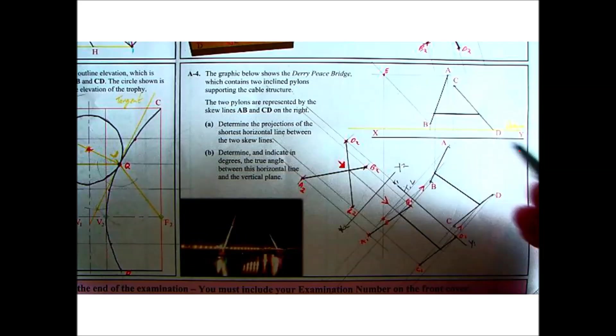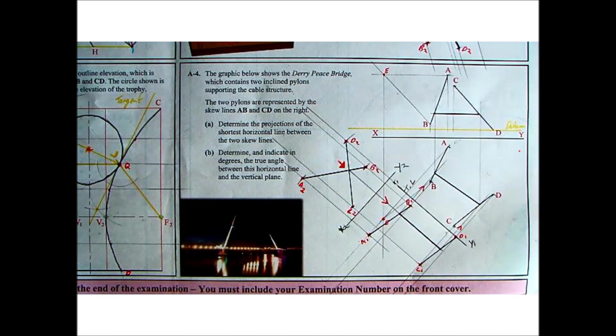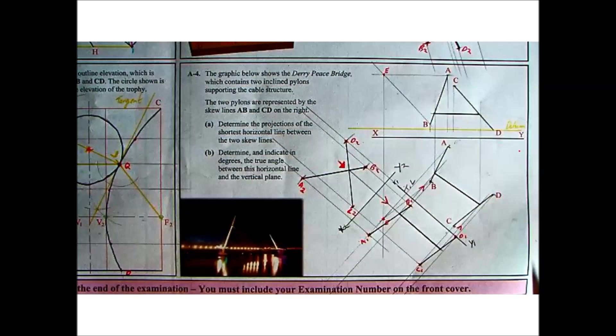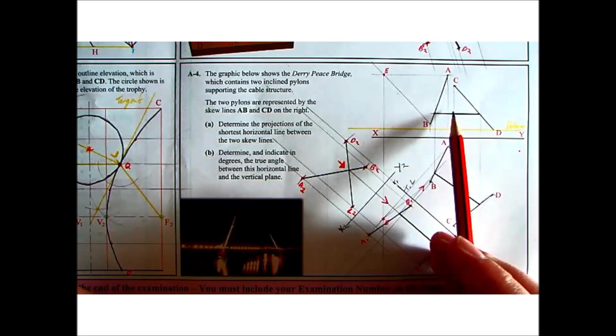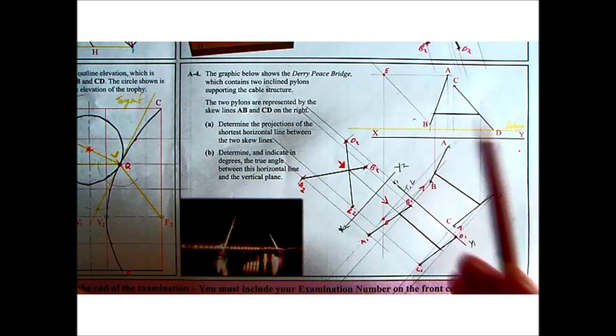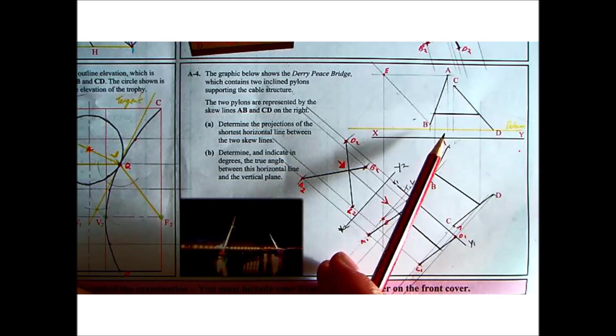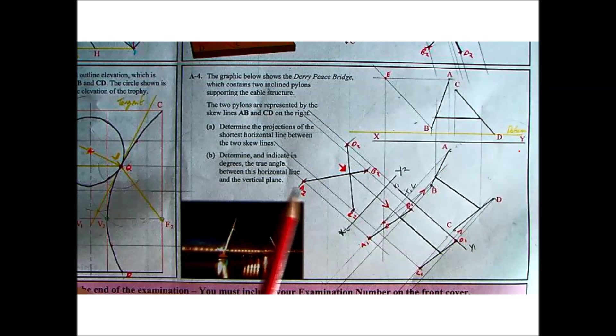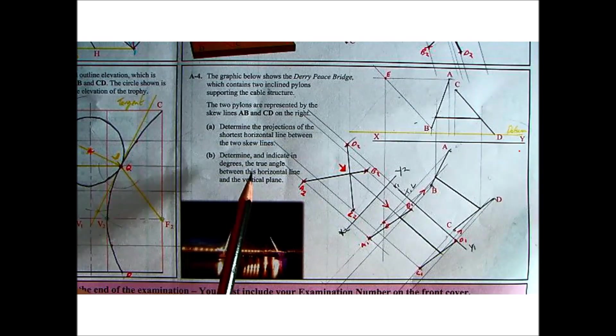Now, part A is done. Part B: determine and indicate in degrees the true angle between this horizontal line and the vertical plane. Okay, so this is our shortest line here, our shortest horizontal distance between them. It's parallel to the XY because it's horizontal. Okay, the horizontal plane.